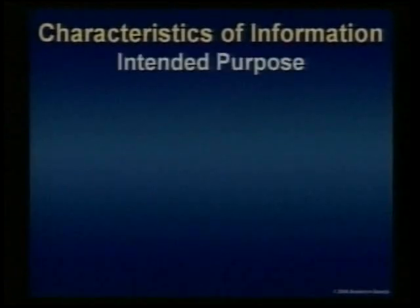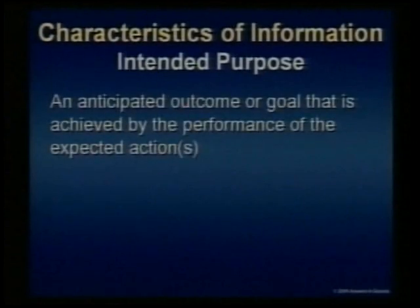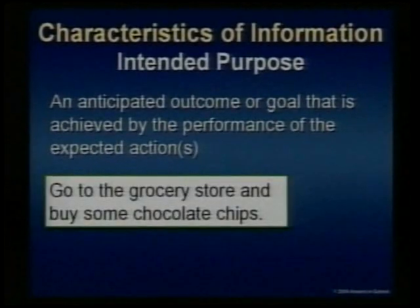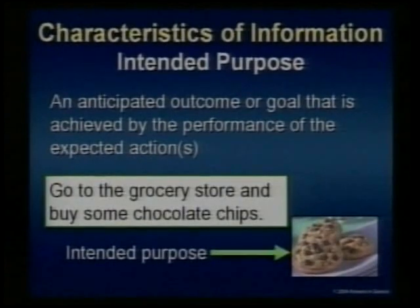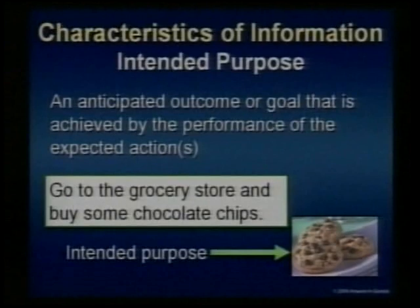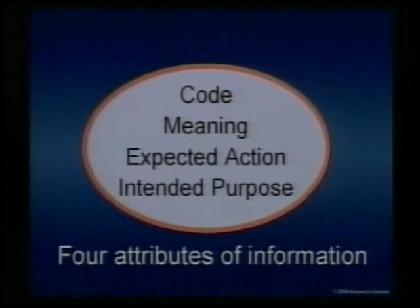The fourth characteristic is an intended purpose — an anticipated outcome or goal that is achieved by the performance of the expected actions. For example: go to the grocery store and buy some chocolate chips. The expected action was somebody would go and buy the chocolate chips, but the intended purpose is to make chocolate chip cookies. Do you see the difference between the expected action and the intended purpose? So here are our four attributes: a code, meaning, expected action, and intended purpose.